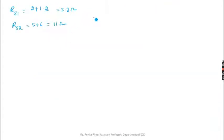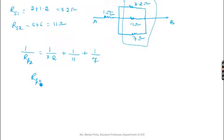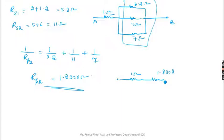Now the circuit has 3.2Ω, 11Ω, and 7Ω all three in parallel. So: 1/RP2 = 1/3.2 + 1/11 + 1/7. You get RP2 = 1.8308Ω, approximately 1.83Ω. This is in series with the 1Ω resistor, so RAB = 1 + 1.83 = 2.83Ω.